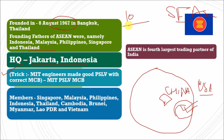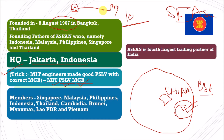There are a total of 10 countries in ASEAN. The trick is MIT, PSLV, MCB. MIT, as you know, is the best engineering university — Massachusetts Institute of Technology. PSLV stands for Polar Satellite Launch Vehicle, by which we launch satellites. MCB is Miniature Circuit Breaker — a protection device so that appliances don't burn out from heavy current flow. So the trick is: the MIT engineers tried to build a good PSLV with a good MCB.